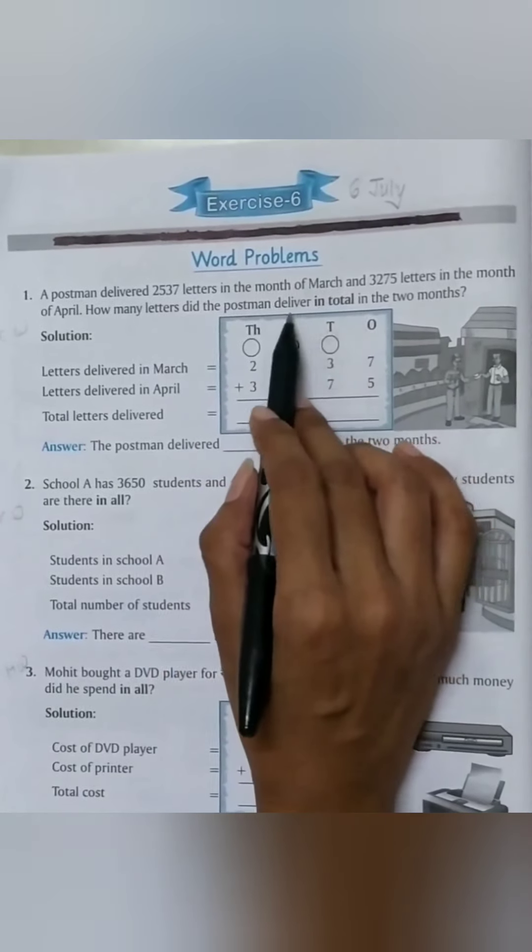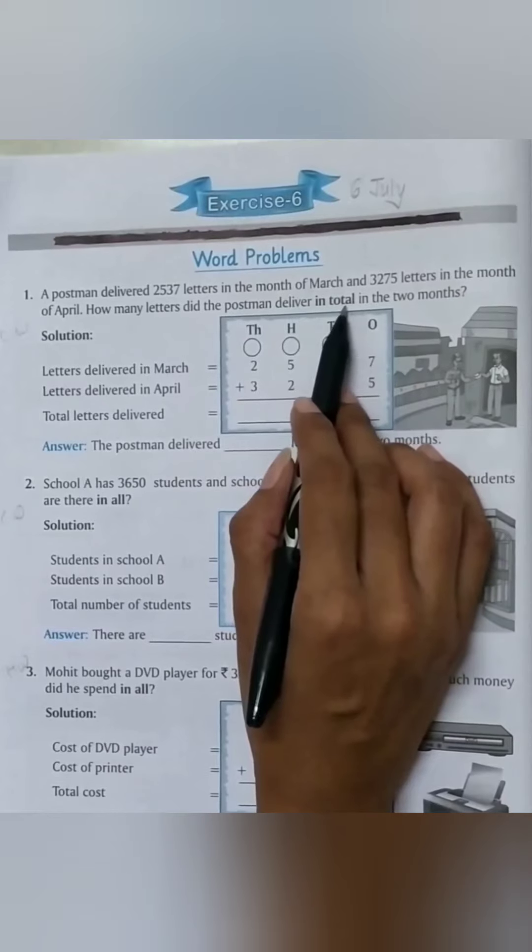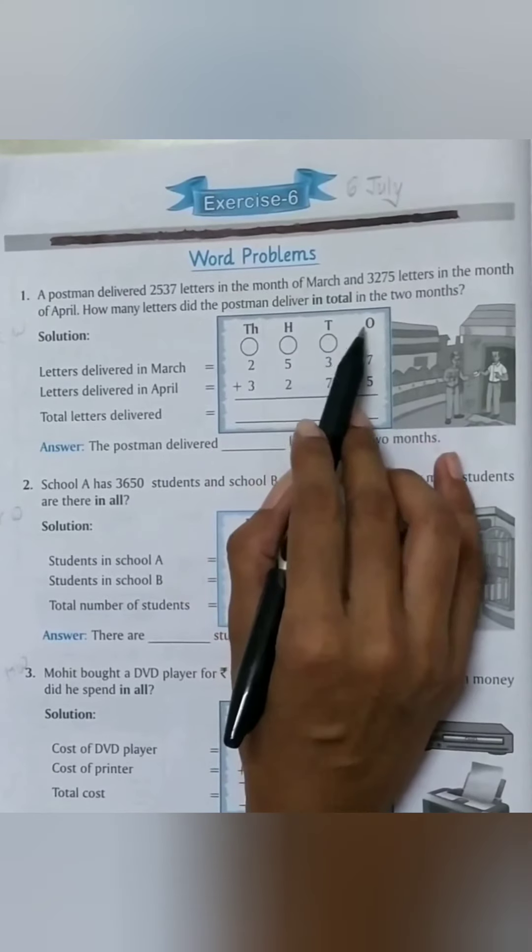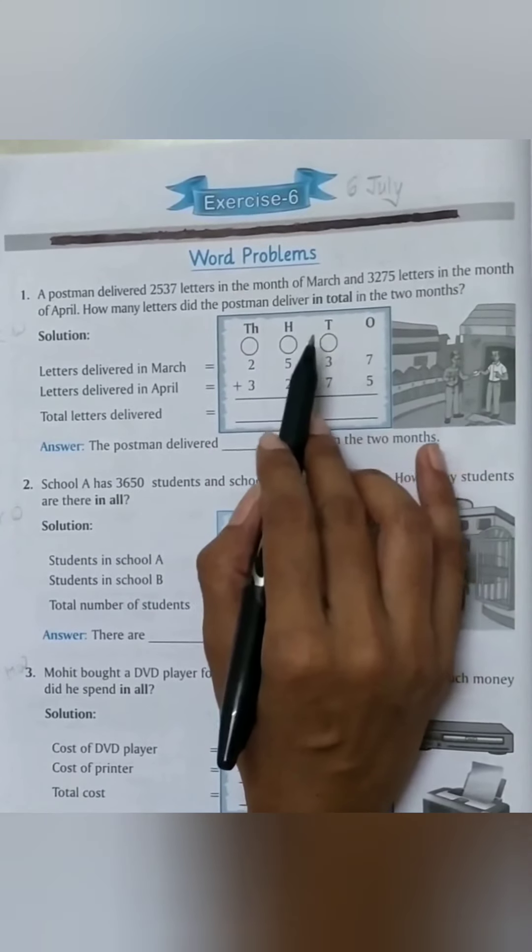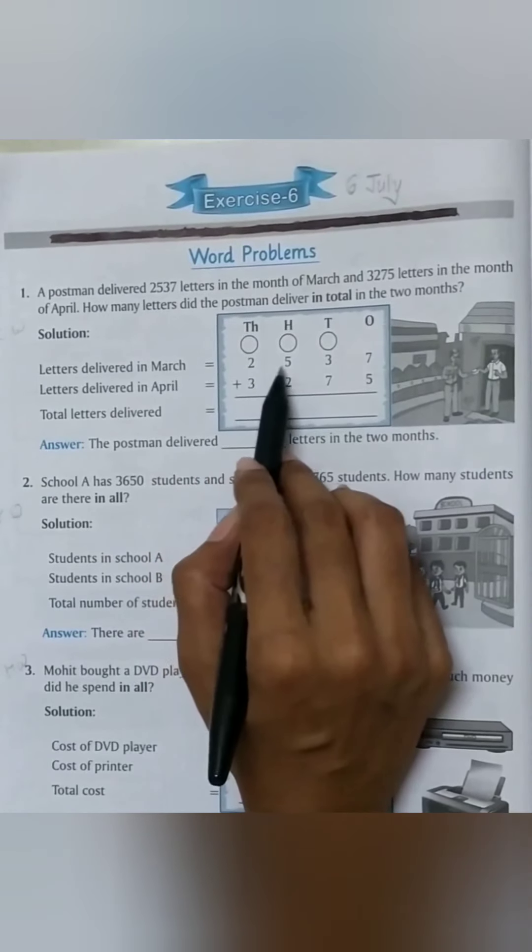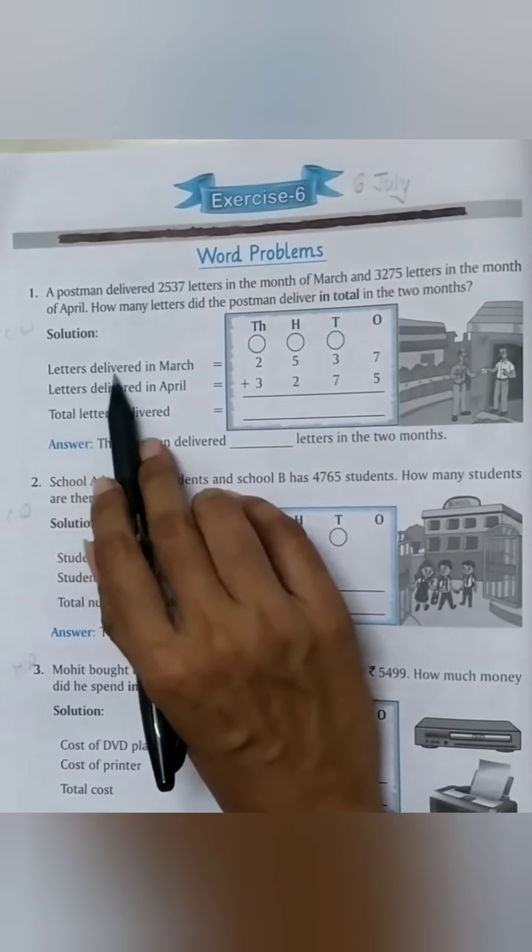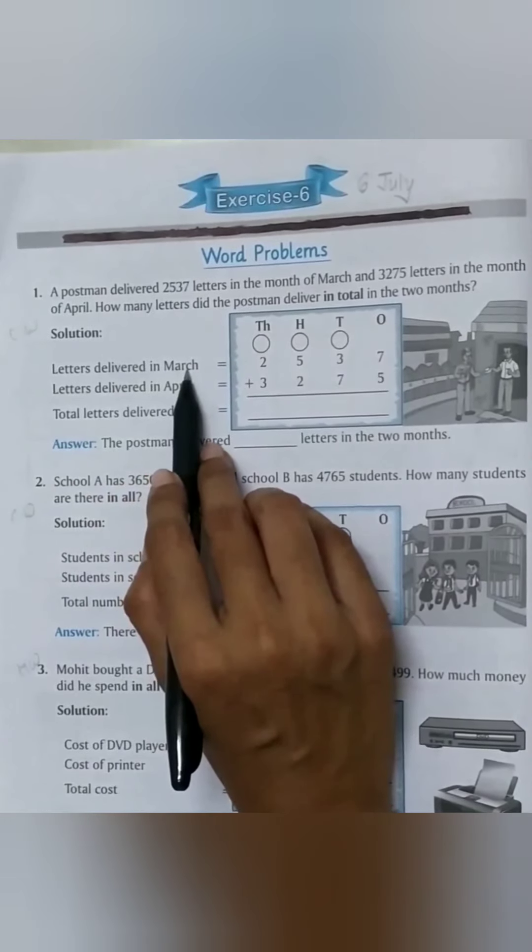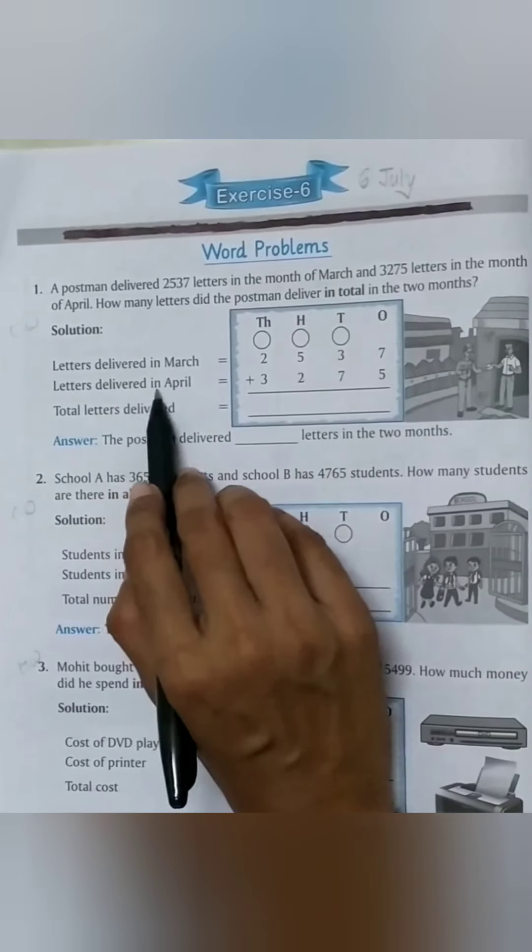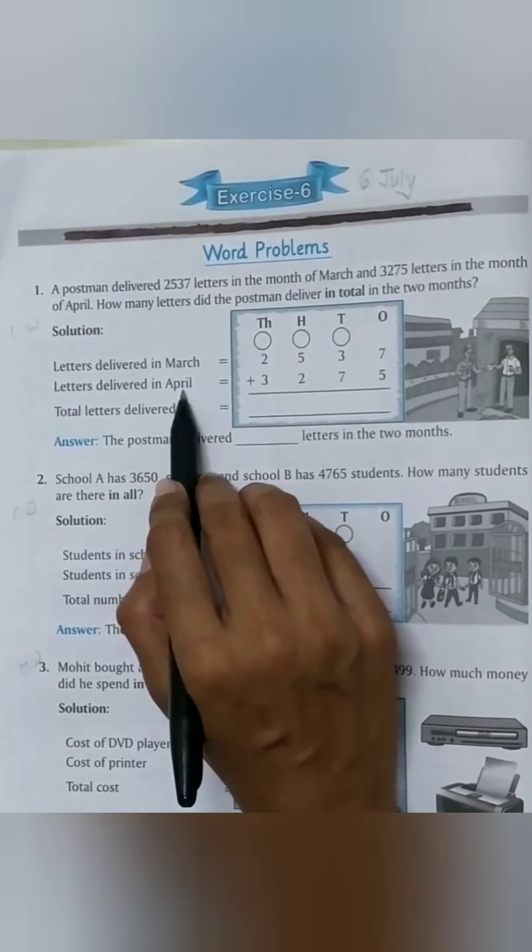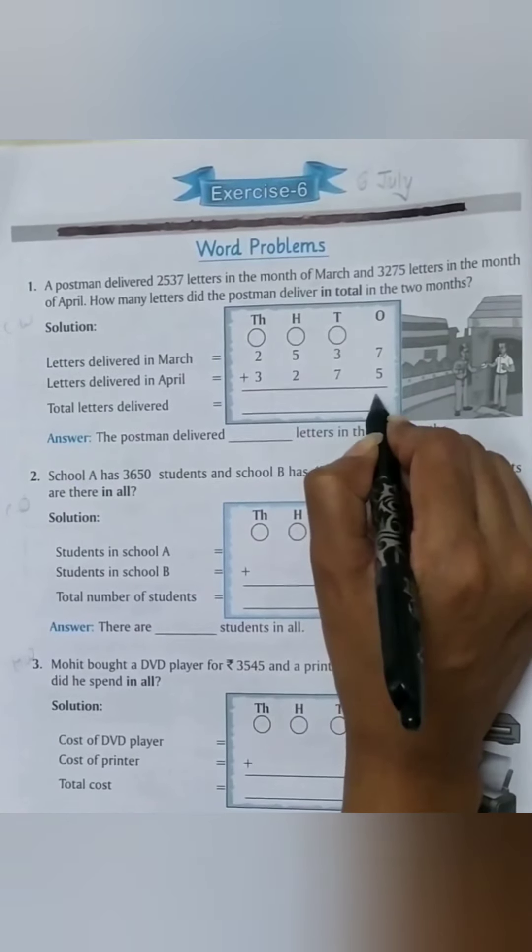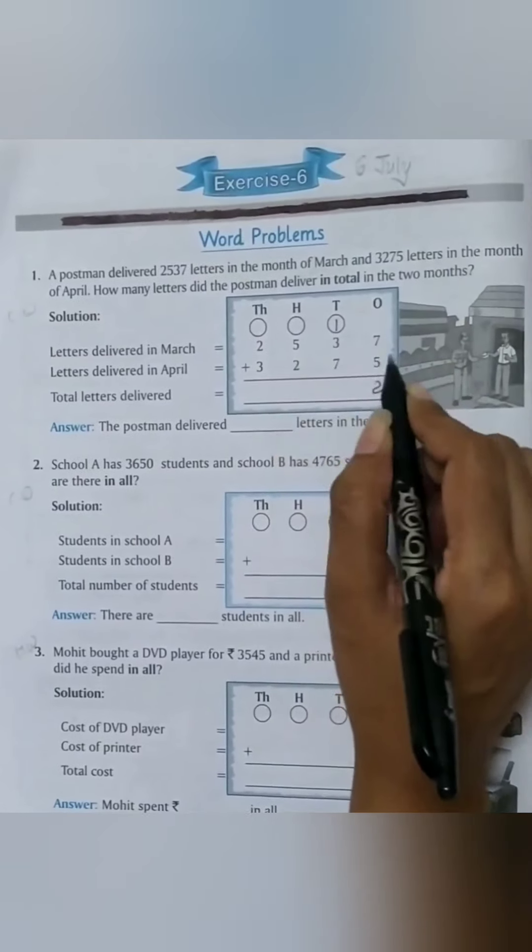We find out the total letters delivered in two months. First, we write down the places: thousands, hundreds, tens, and ones. In March, 2537 letters were delivered. In April, 3275 letters were delivered. Start from the ones place: 7 plus 5 equals 12. Write down 2, carry 1.